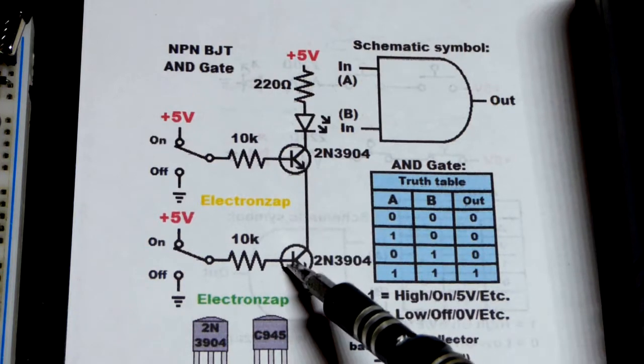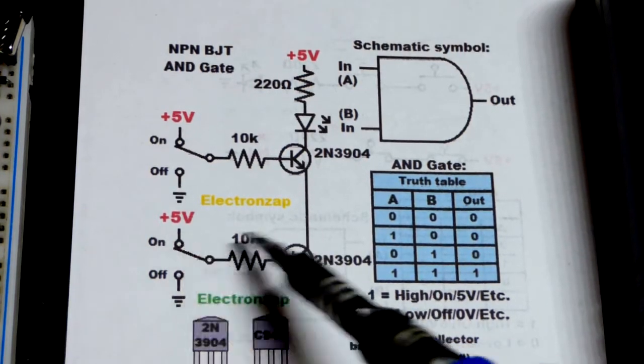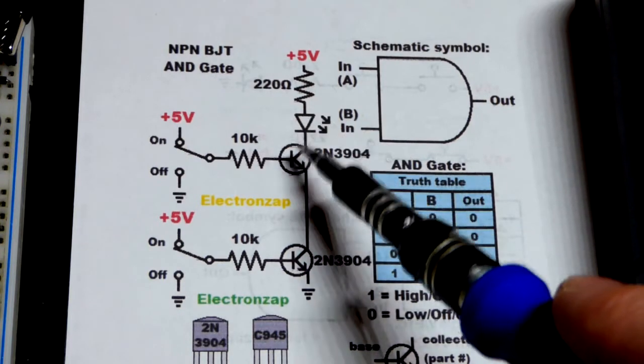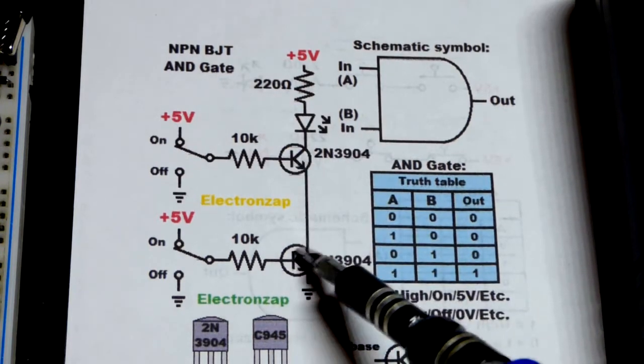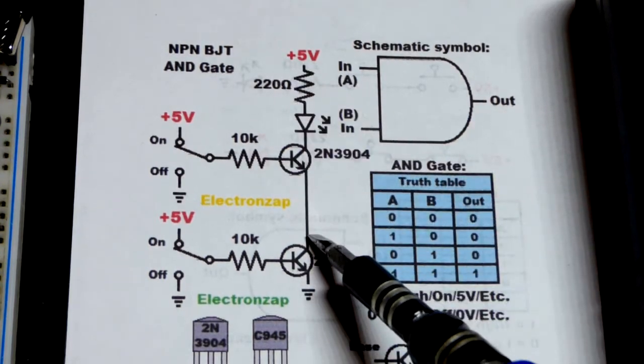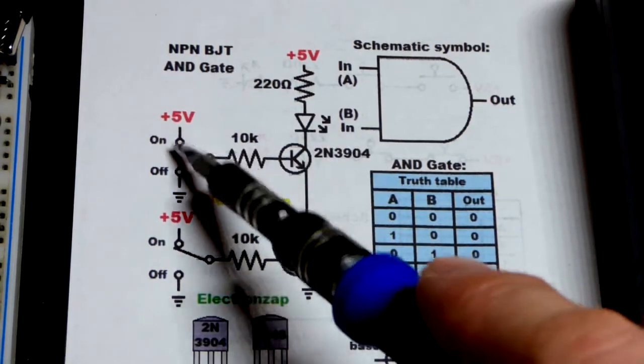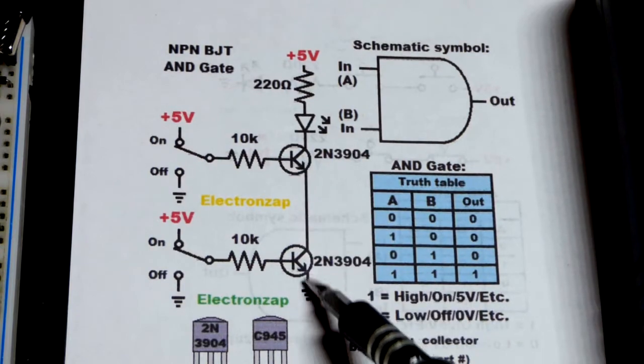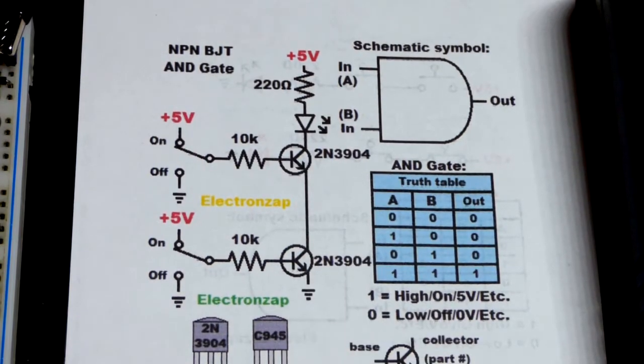But we have two of the transistors in series now. So even if this one is on, if that one's off the LED won't light up. If that one's on but that one's off, again the path is cut off, the LED will not light up. We need both of them on for the LED to light up. Current will flow through that way.